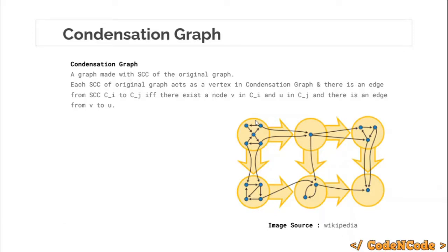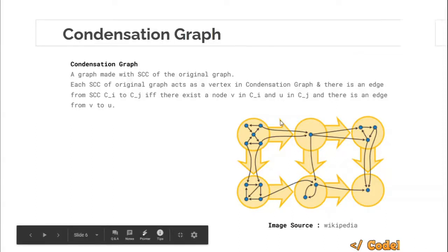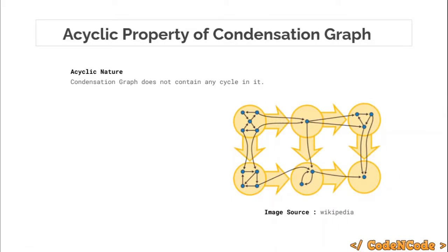Now, one of the most important properties of the condensation graph is that it does not contain any cycle. This is our claim. To prove it, we use contradiction — assume there is a cycle in the condensation graph.